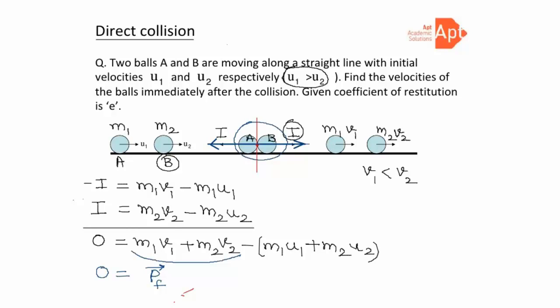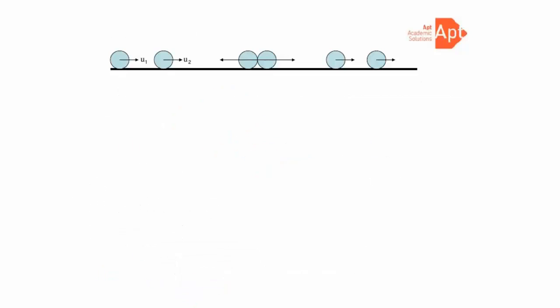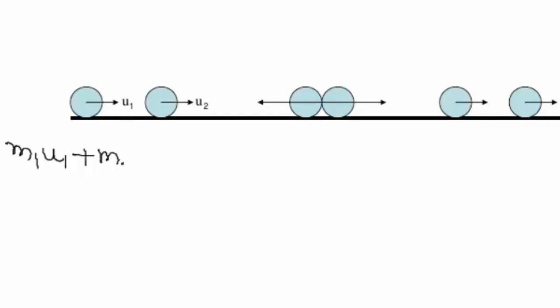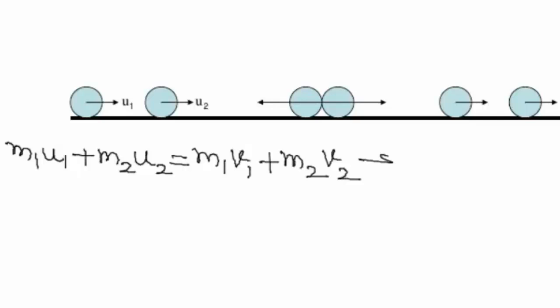The net impulse acting on the two-ball system is zero, so momentum is conserved. This gives us our first equation: m1·u1 + m2·u2 = m1·v1 + m2·v2. The left side is the initial momentum of the system and the right side is the final momentum.